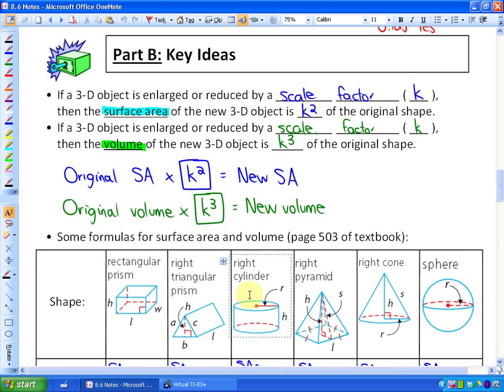In this lesson, we are going to continue to look at how scale factor affects surface area and volume. Probably the two most important things that we learned in the previous lesson is that the original surface area times the scale factor squared, and you can look at the activity that we did, is equal to the new surface area.